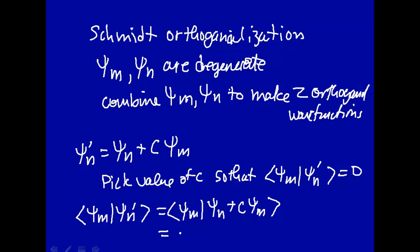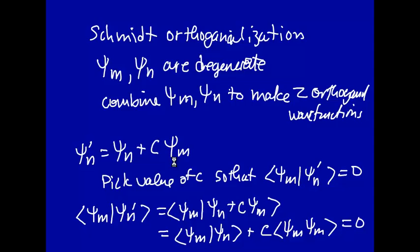And this would just be psi M psi N plus C times psi M psi M. And you want that to be equal to zero. So what value of C makes this vector orthogonal? We'll just solve this equation for C. C is just equal to psi M psi N over psi M psi M. So if you pick this value of C.